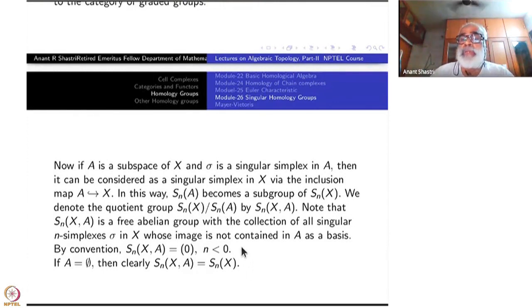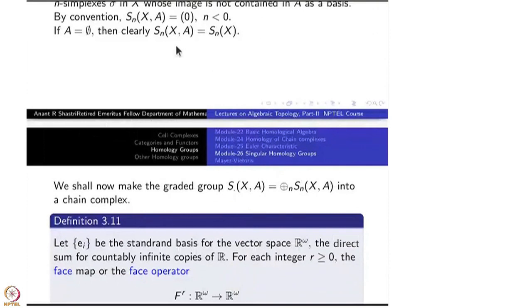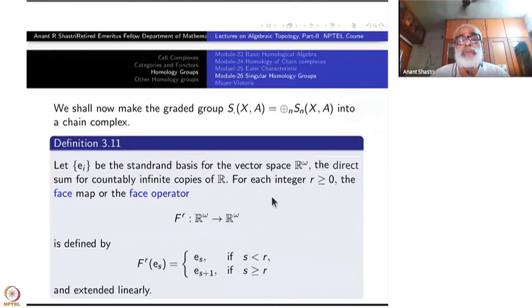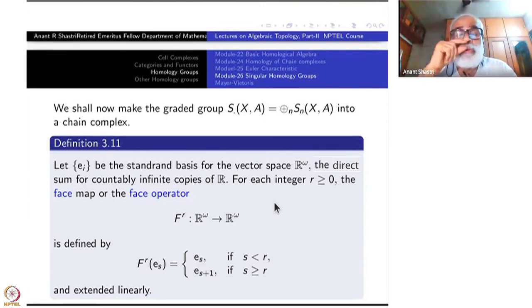We have defined two functors simultaneously: one taking values on pairs of topological spaces and one on just topological spaces. Similar to S_N, we define S_•(X,A) as the direct sum of S_N(X,A) over all N. Now let us make them both into chain groups.